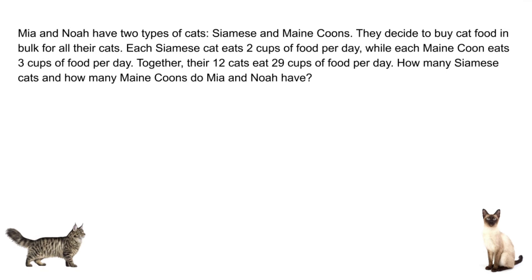Let's call Siamese X and Maine Coons Y. We're going to come up with two equations because we're given two pieces of information. One equation will be about how many cups each cat eats and the total amount of cups. The other will be about how many cats they have altogether.